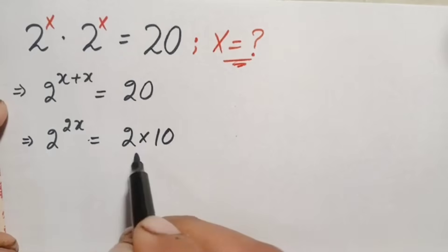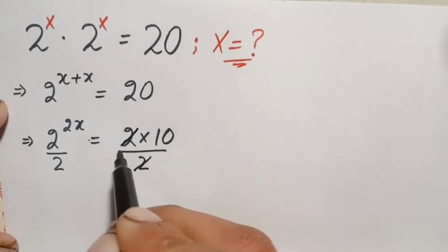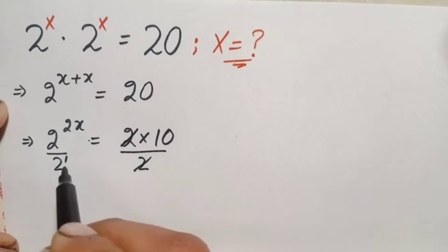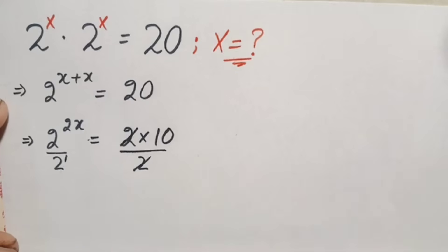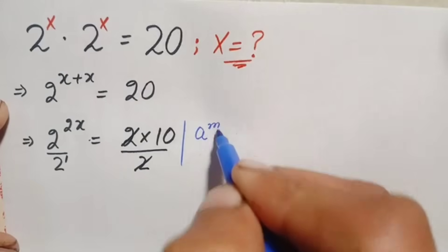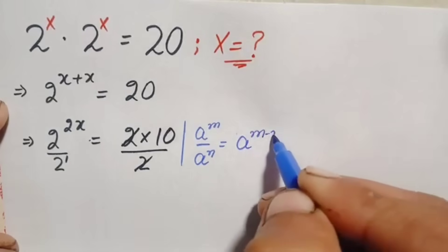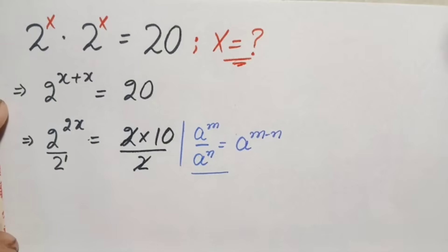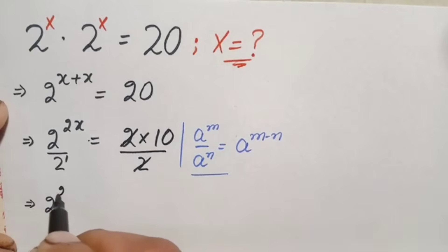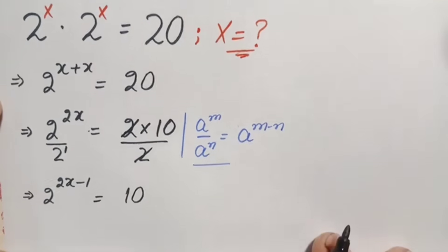Now there is 2 in the base on both sides, so we will divide both sides by 2. This 2 and this 2 will be cancelled. In the left hand side, the power of the denominator is 1, so we use the exponential identity: a raised to power m divided by a raised to power n equals a raised to power m minus n. Using this identity, the left hand side becomes 2 raised to power 2x minus 1, and only 10 is left on the right hand side.